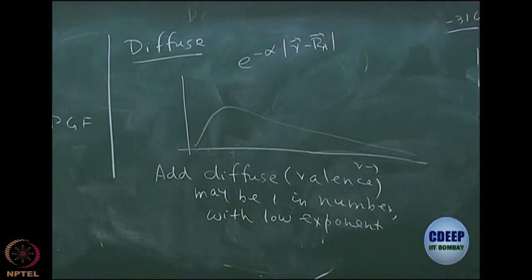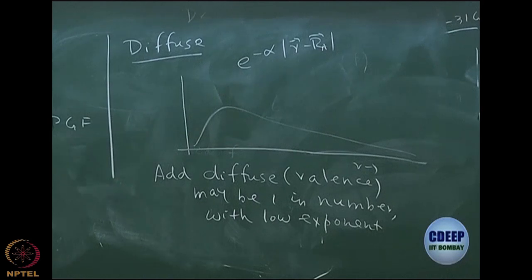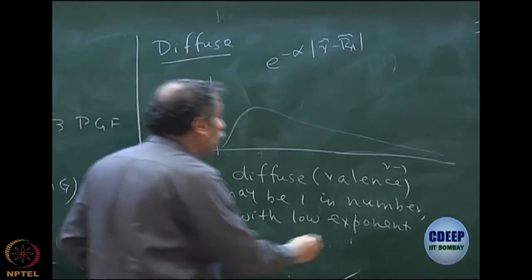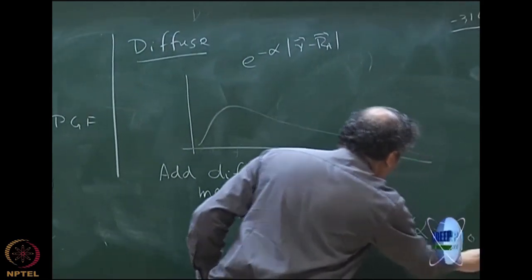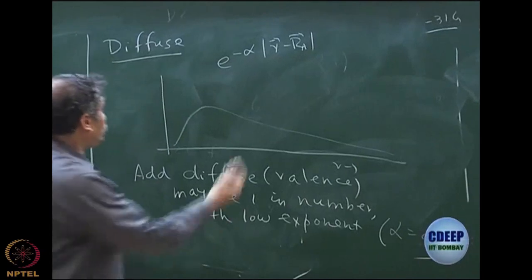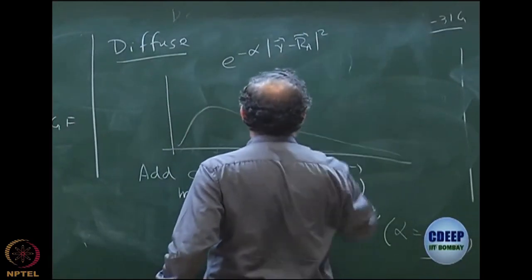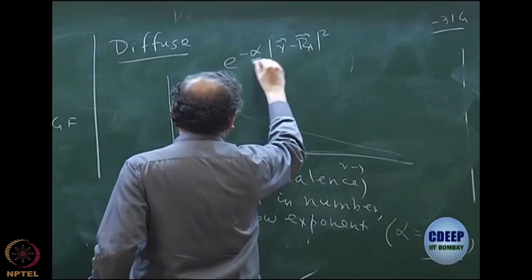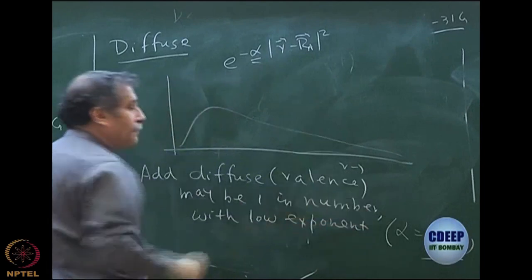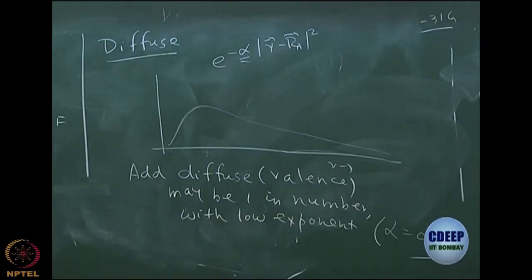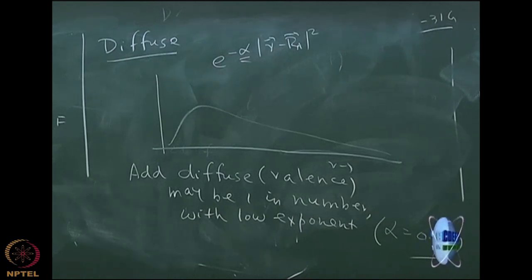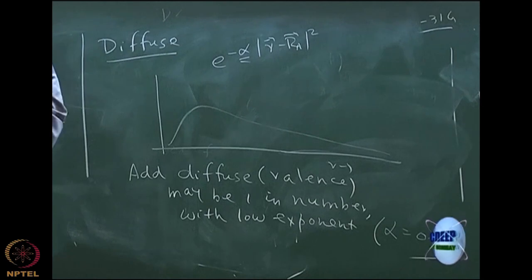If you use a low exponent — alpha can be as low as 0.01 — then it is also important today to add diffuse functions. A typical diffuse basis set is 6-31G++DP, meaning 6-31G plus-plus with polarization D and P.